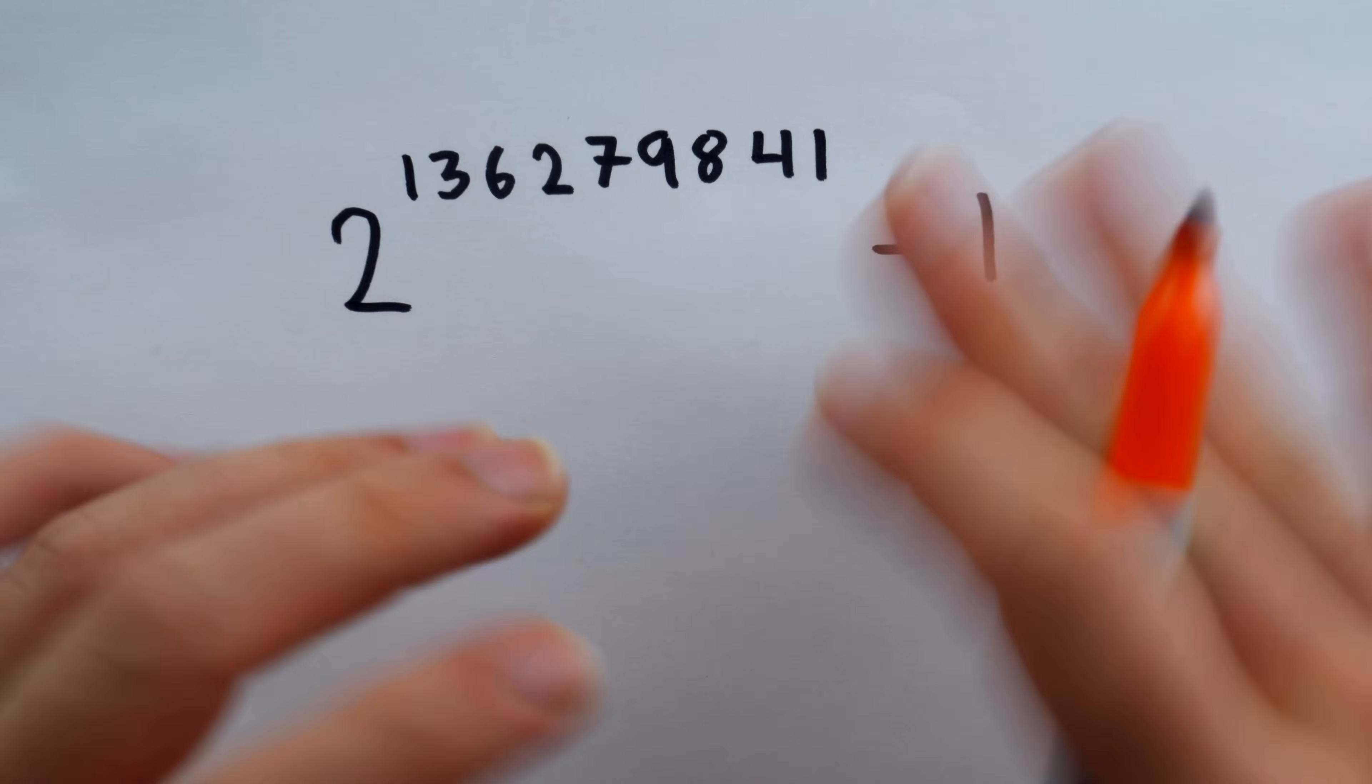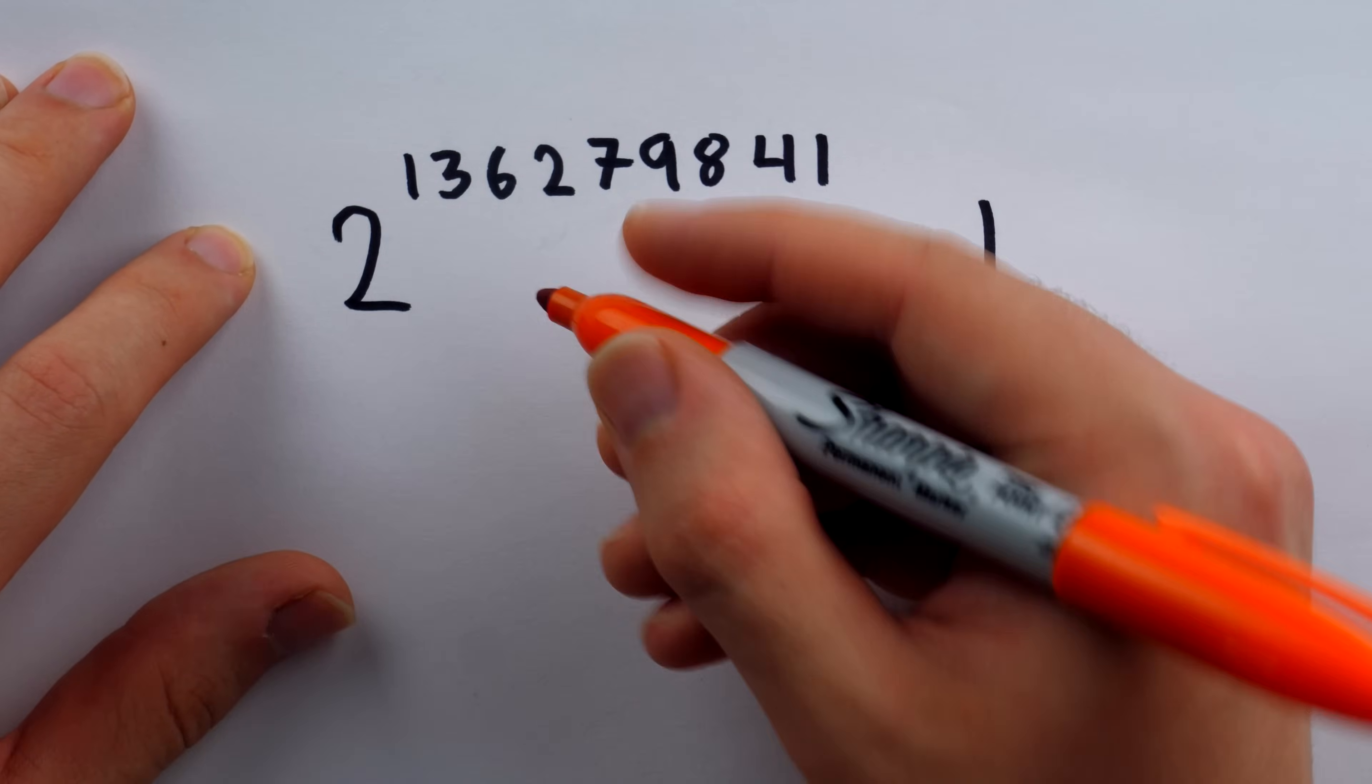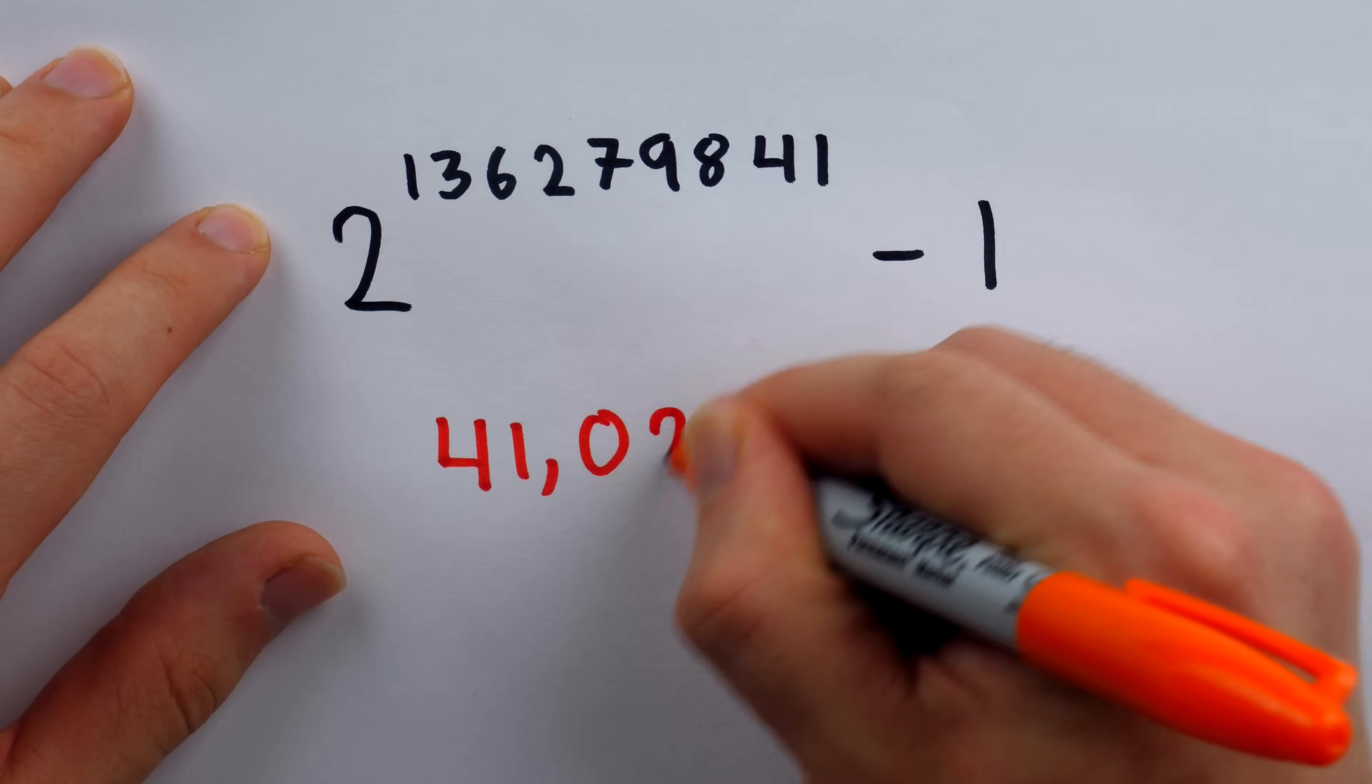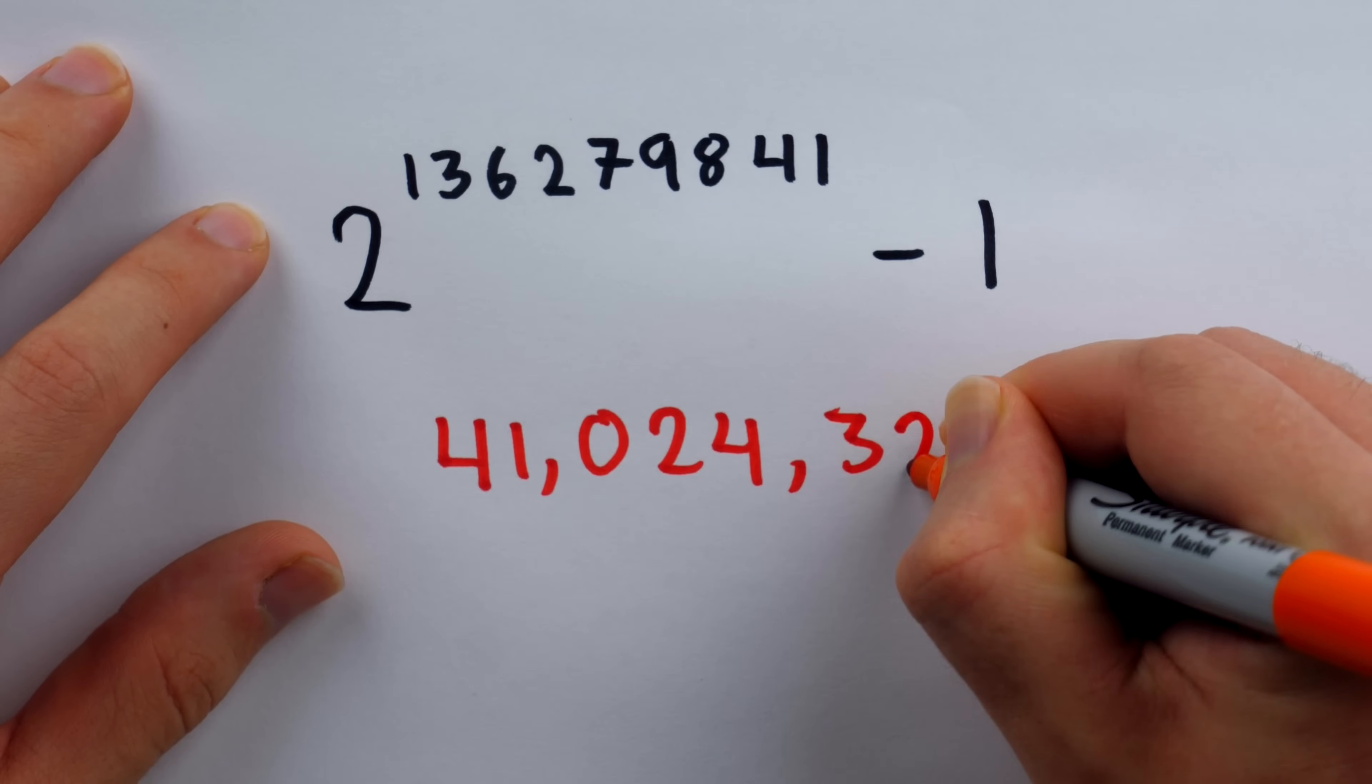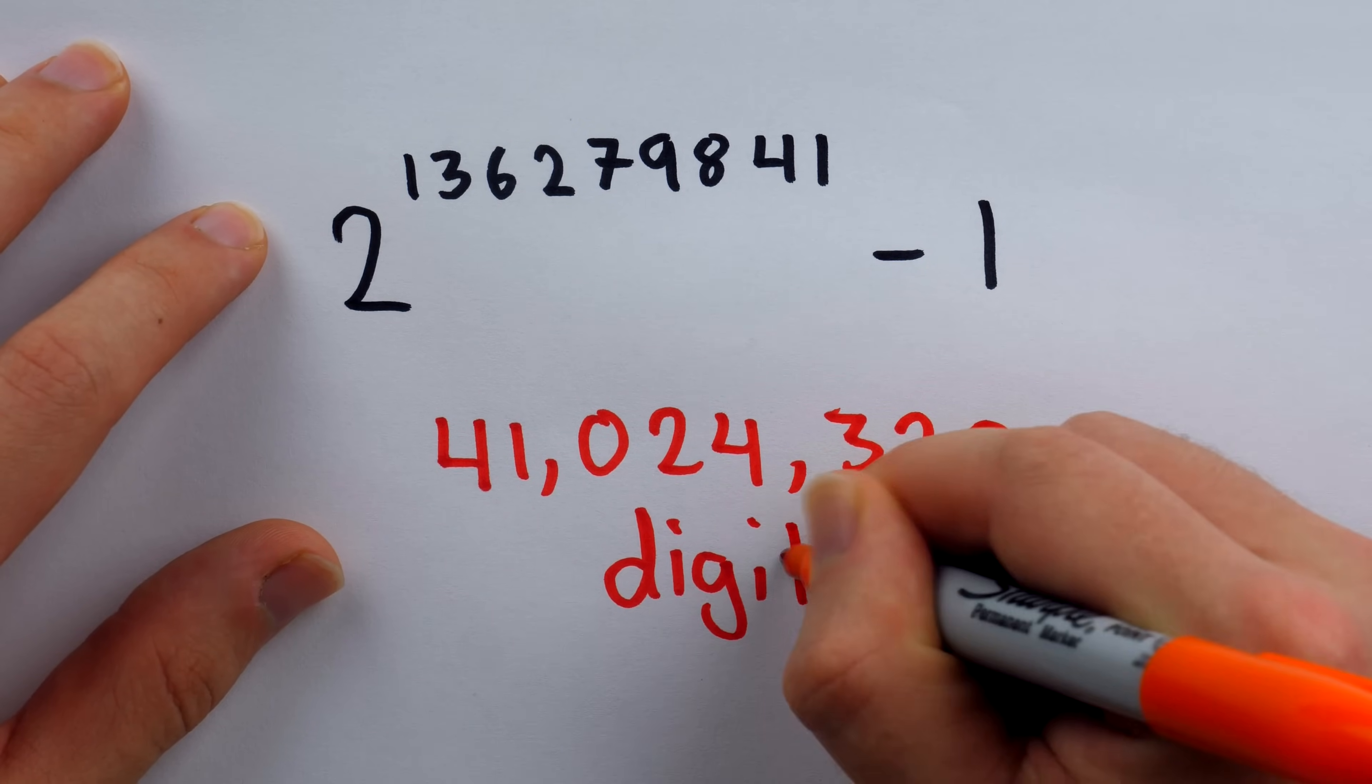Of course, it's more like us going on a rabbit hunt for these things rather than them showing themselves. But anyways, it has 41,024,320 digits. That's just how big and massive this new prime is.